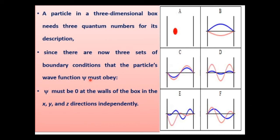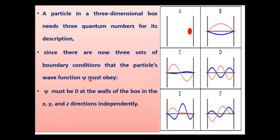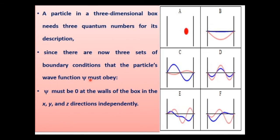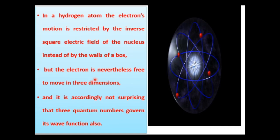In a three-dimensional box, three quantum numbers are needed because there are three sets of boundary conditions that the particle's wave function must obey — the wave function must be zero at the walls in the x, y, and z directions independently. In the hydrogen atom, the electron's motion is restricted by the inverse-square electric field of the nucleus instead of box walls, but the electron is free to move in three dimensions, and so it is not surprising that three quantum numbers govern its wave function as well.